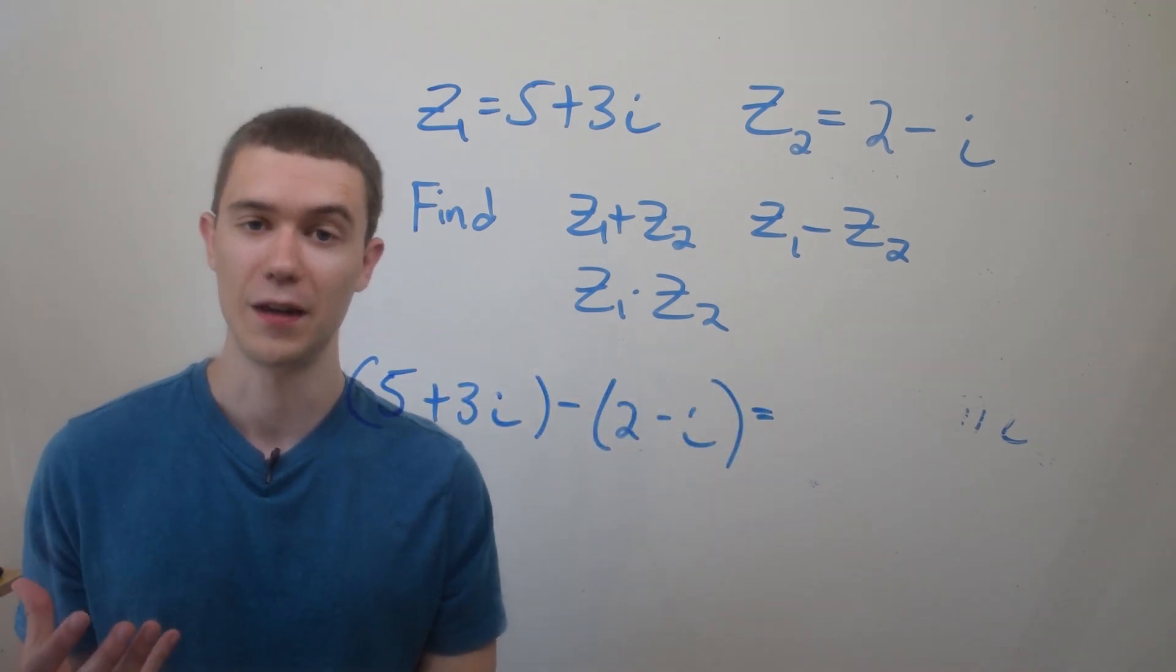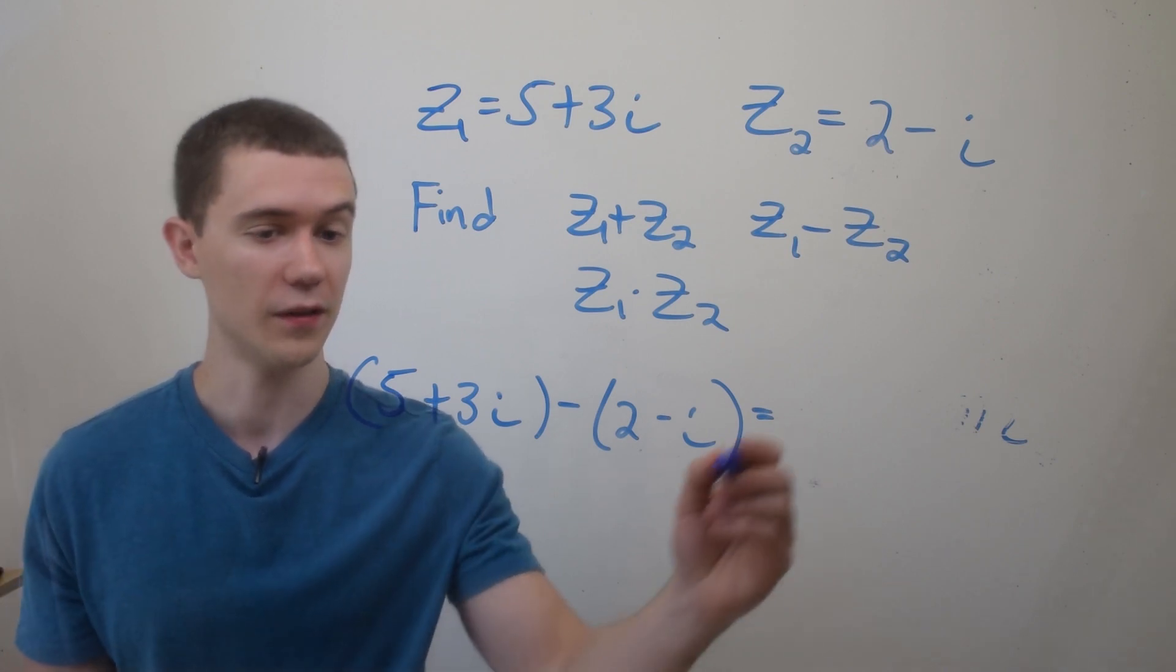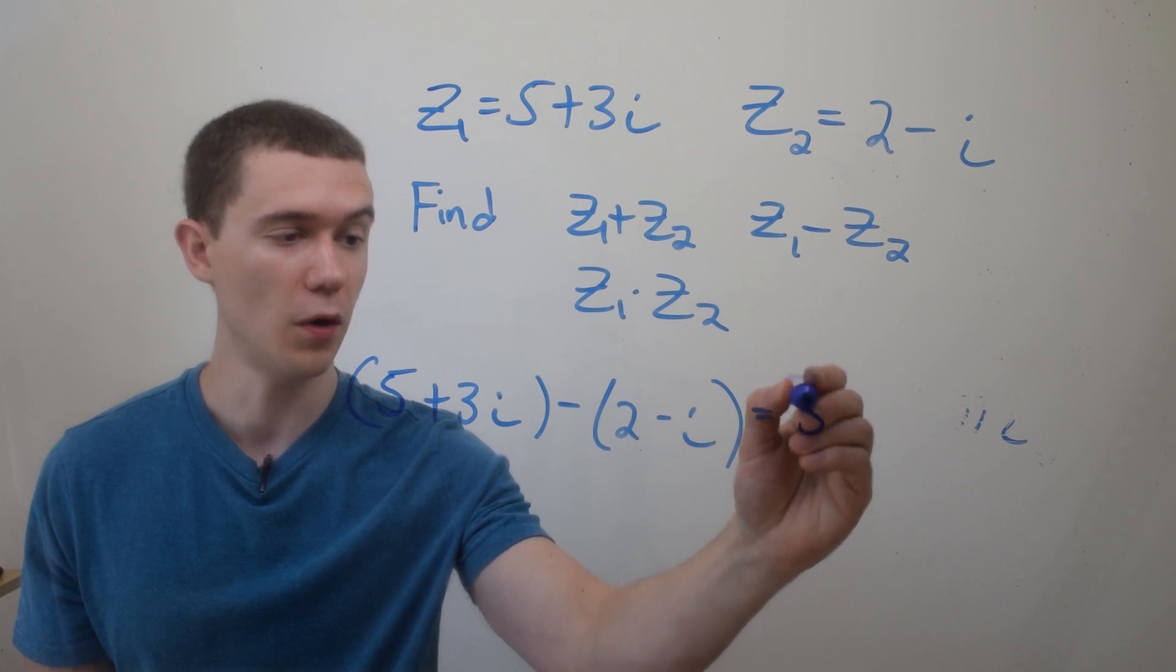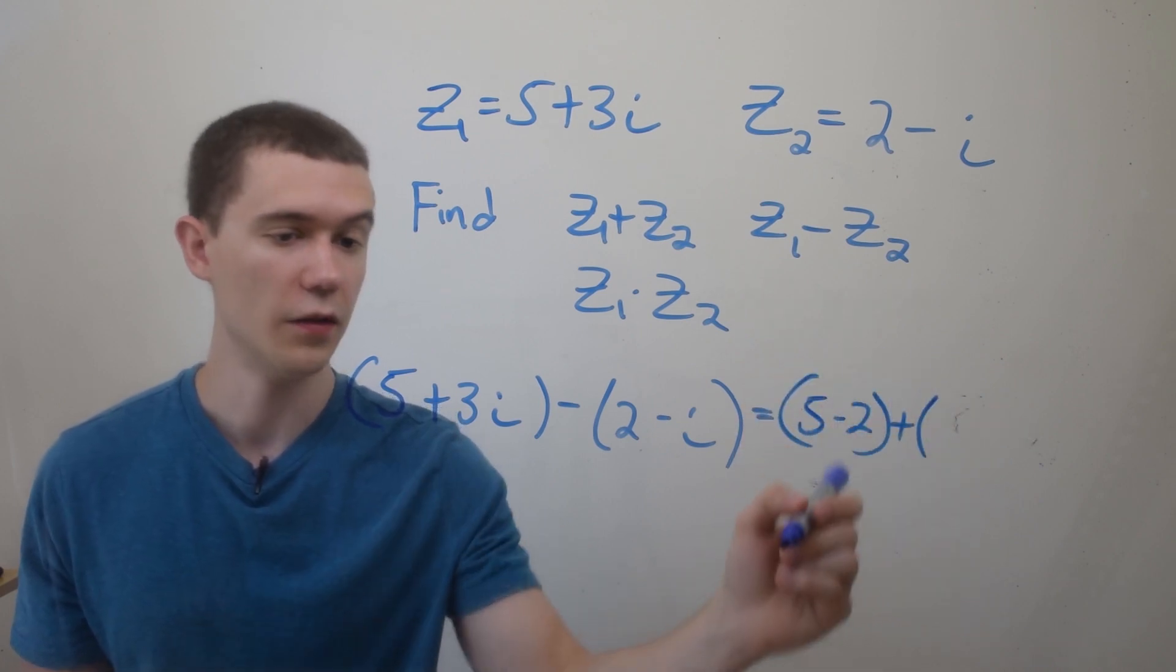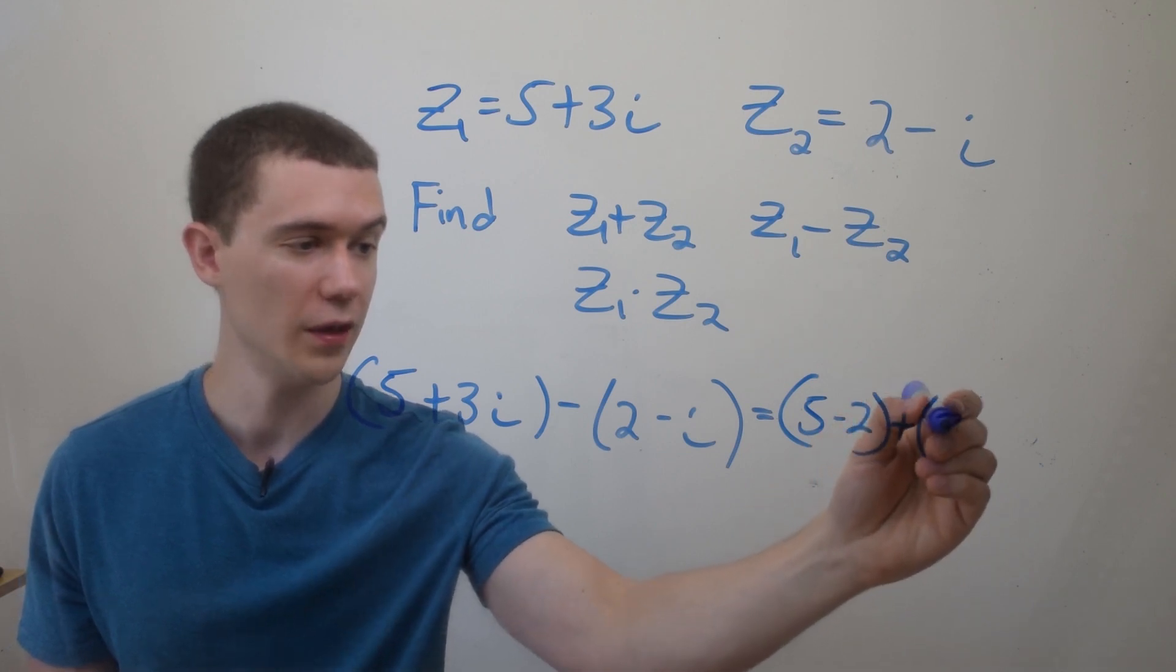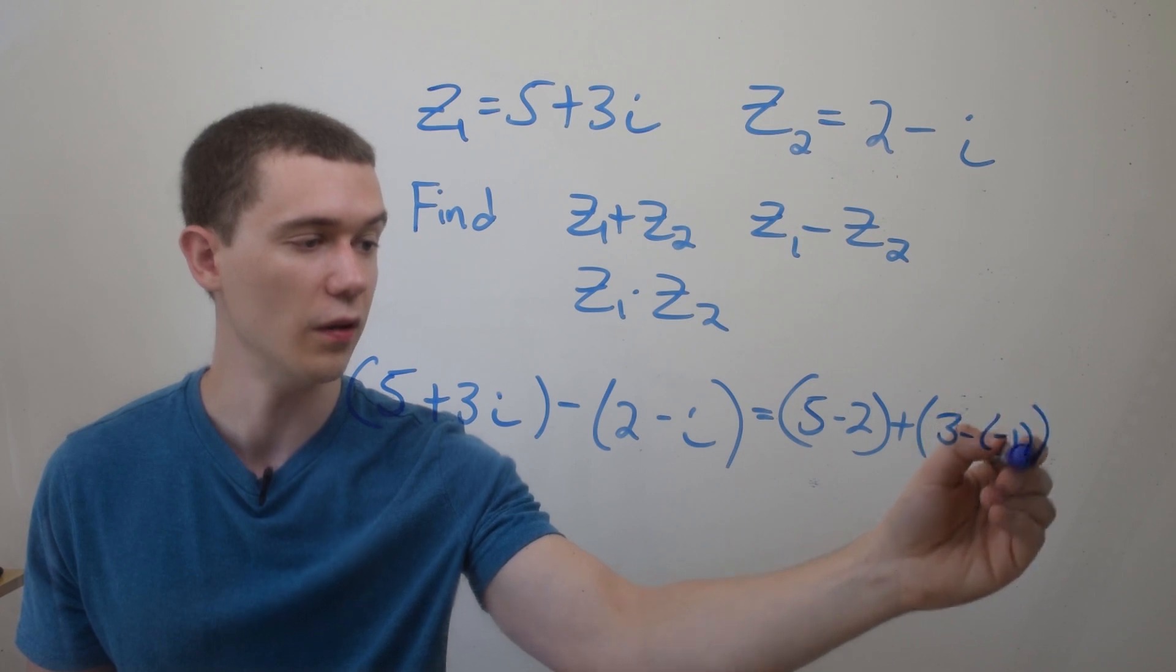You subtract complex numbers in the same way you add them. I'm going to subtract the real parts, and I'm going to subtract the imaginary parts. So here, the new real part will be 5 minus 2. The new imaginary part will be 3, and I have to be a little careful here, minus negative 1i.